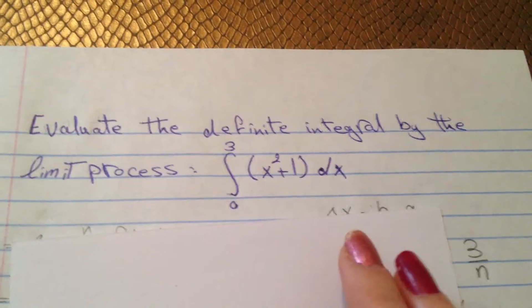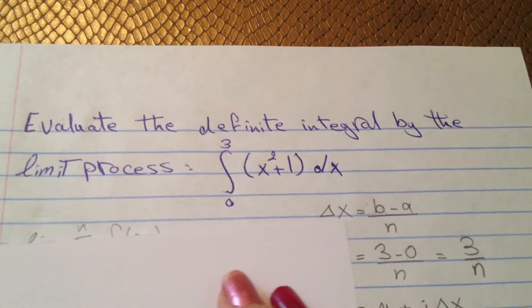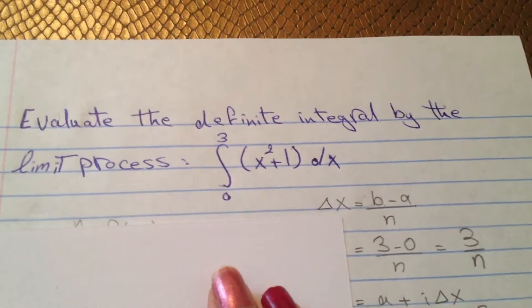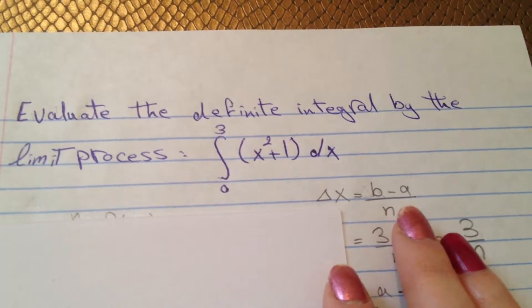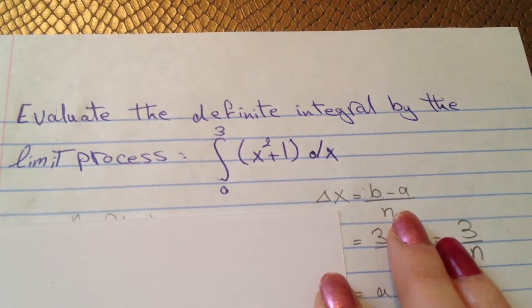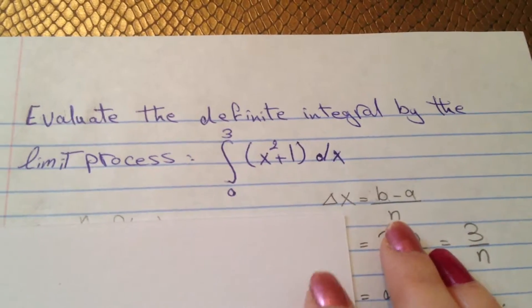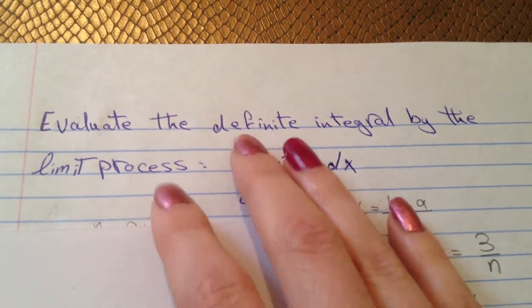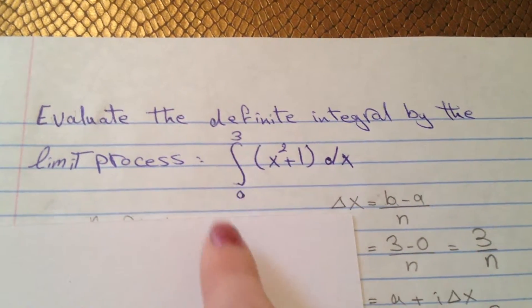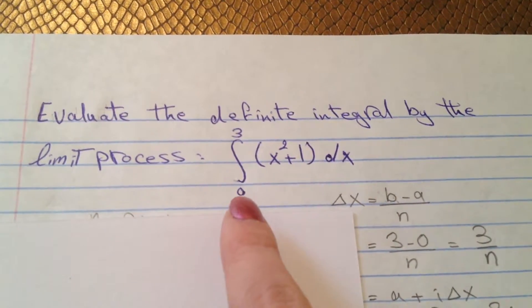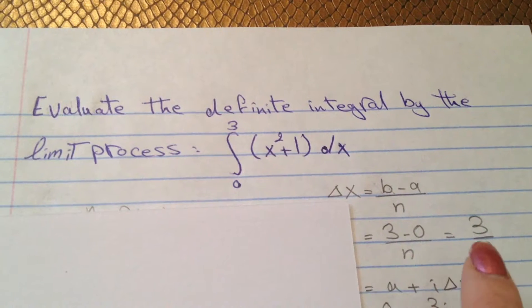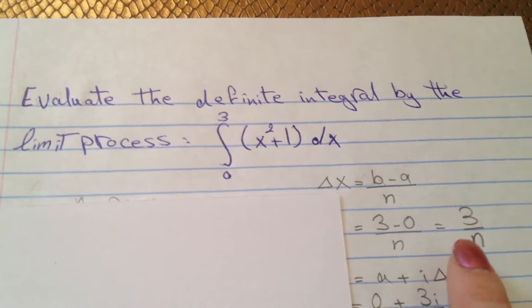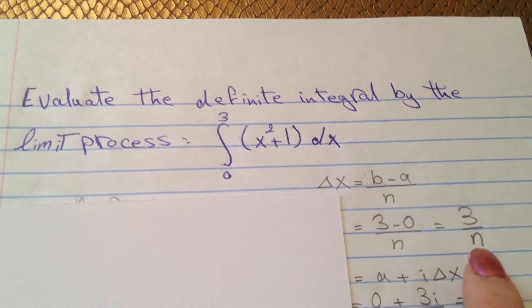First, we have to find delta x, which is equal to b minus a over n. So we have a and b. So we have 3 minus 0 divided by n, which gives us 3 over n.